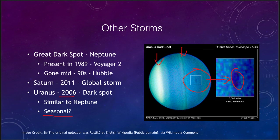Uranus is pointing almost directly towards the sun, giving it the most extreme seasons. For one season of about 21 years, one pole points towards the sun. So you'd have 21 years of summer, then 21 years of fall, 21 years of winter, and then 21 years of spring. Seasons would be very long but also very extreme because during that summer season the entire pole is pointed directly towards the sun.